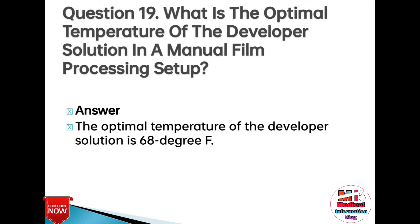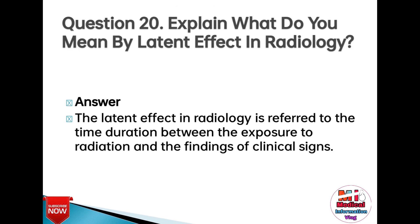Question 19: What is the optimal temperature of the developer solution in a manual film processing setup? Answer: The optimal temperature of the developer solution is 68 degrees Fahrenheit.